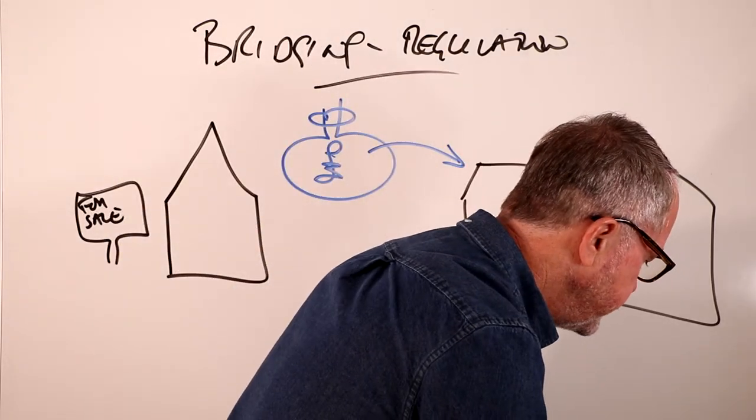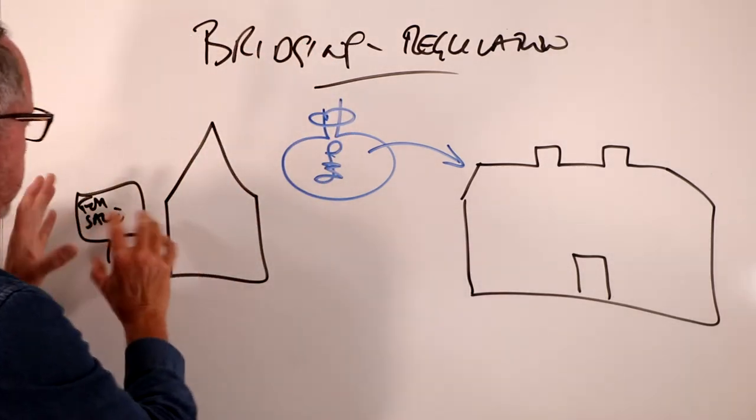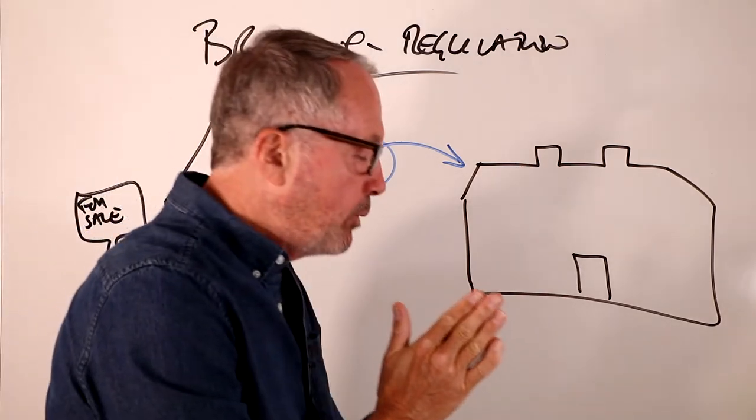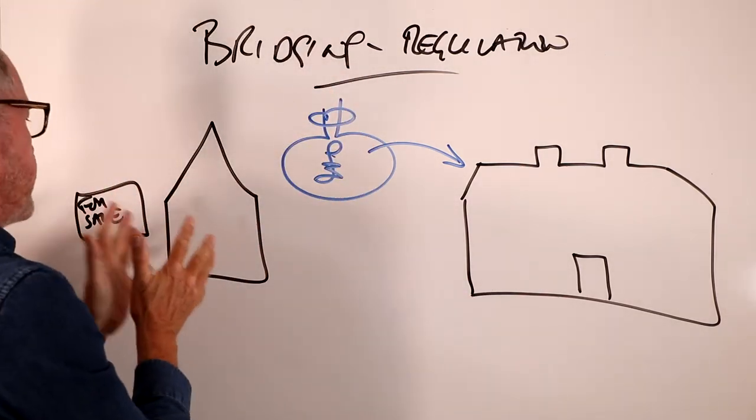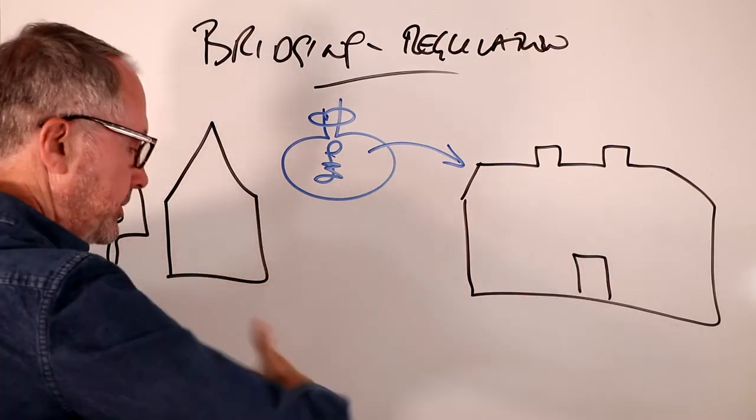You can have open bridging and closed bridging. Open bridging is where there's no sign at all this house is ever going to be sold. Closed bridging is where you've exchanged on that property typically, and you've got a period of time where you're going to get completion, you know your dates.